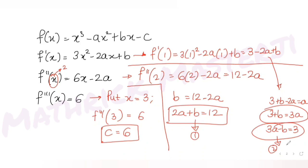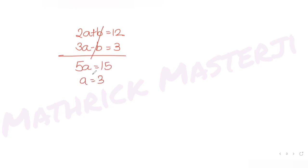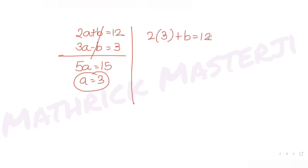Adding the two equations: 5a = 15, so a = 3. Substituting into equation one: 6 + b = 12, so b = 6. We now have a = 3, b = 6, and c = 6.